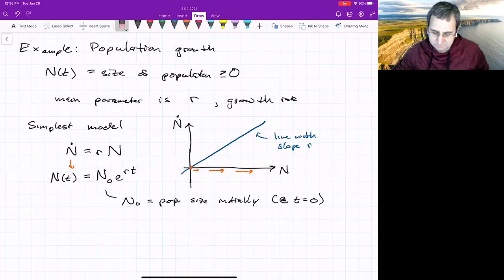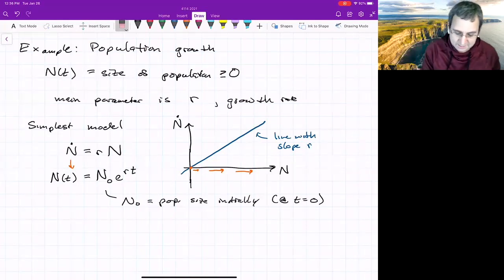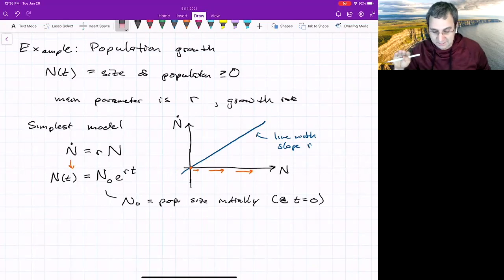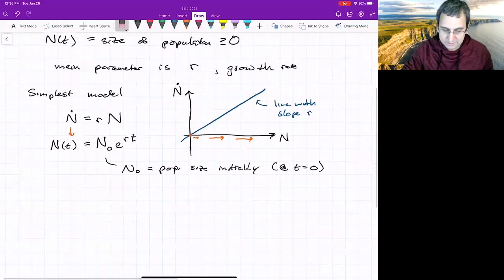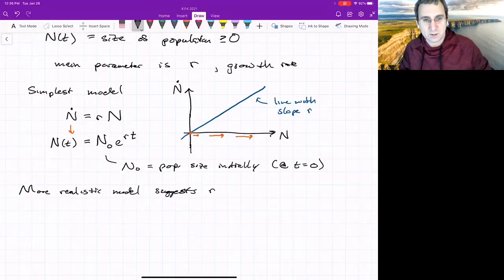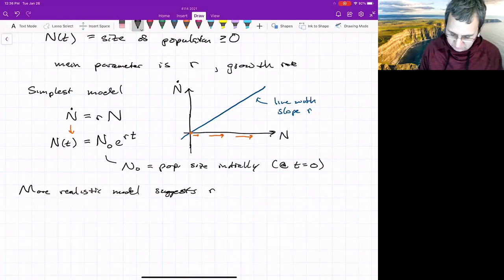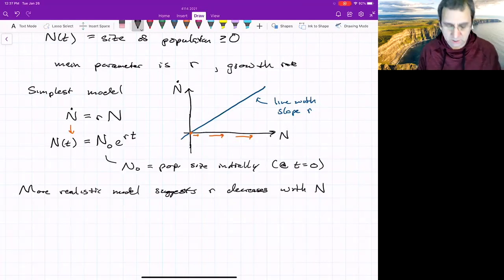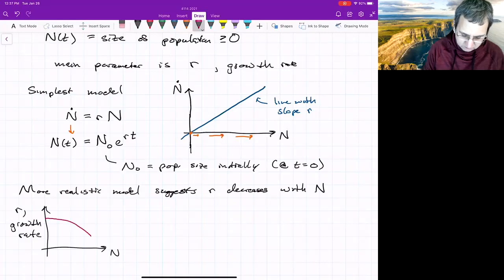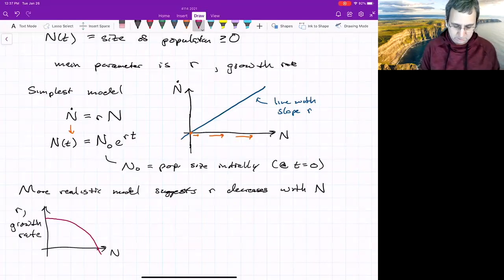So in this case, the population just goes to infinity, which does not seem realistic. And so an additional part of this model was added to make it more realistic was that basically that this growth rate depends on N. It's not a constant, but it actually decreases with N. So that's the more realistic model. In fact, it doesn't increase, it actually decreases.